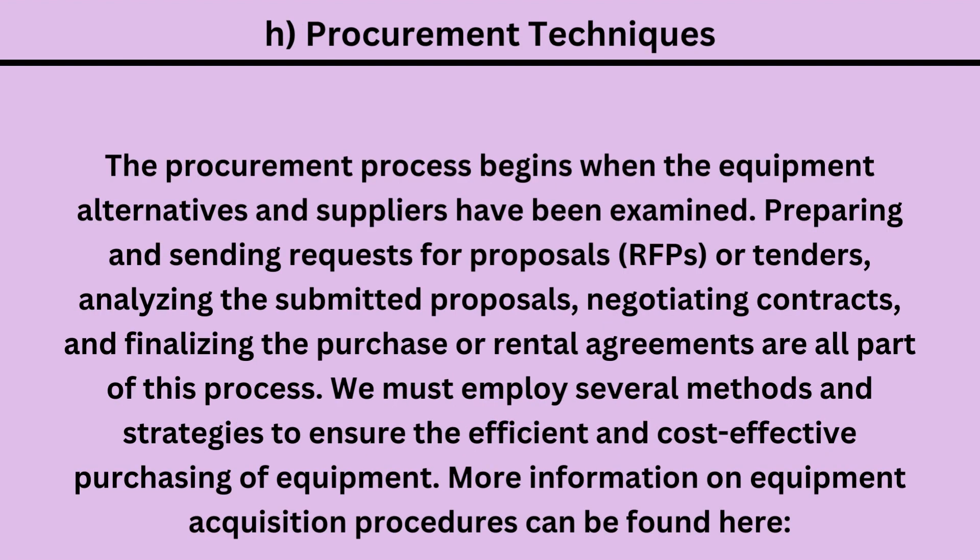H. Procurement techniques. The procurement process begins when the equipment alternatives and suppliers have been examined. It involves preparing and sending requests for proposals (RFPs) or tenders, analyzing the submitted proposals, negotiating contracts, and finalizing the purchase or rental agreements. We must employ several methods and strategies to ensure the efficient and cost-effective purchasing of equipment.